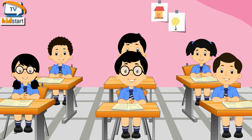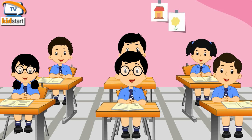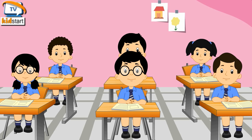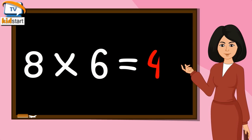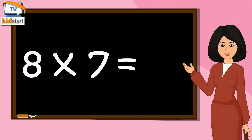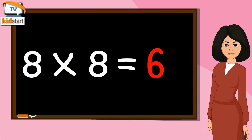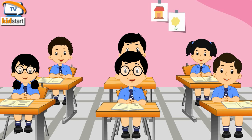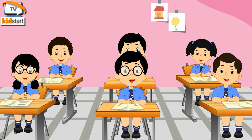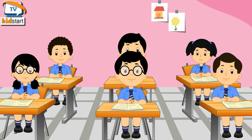8 4's are 32. 8 5's are 40. 8 6's are 48. 8 7's are 56. 8 8's are 64. 8 9's are 72. 8 10's are 80.